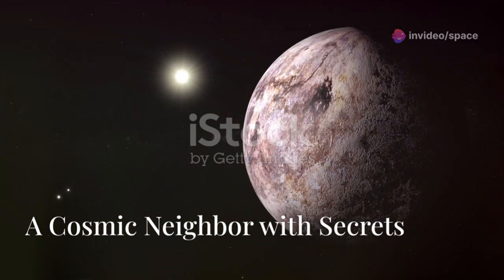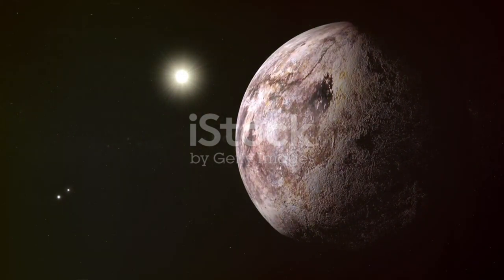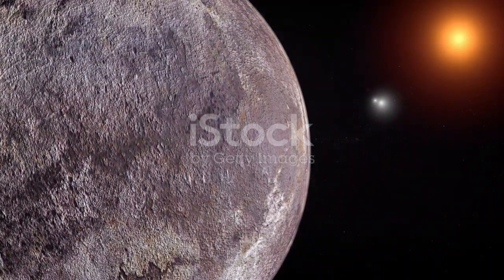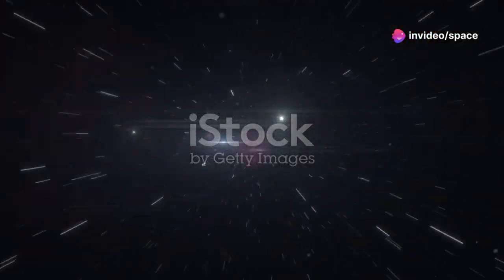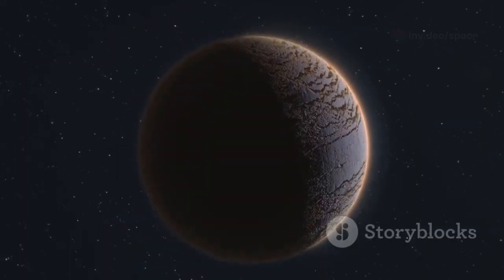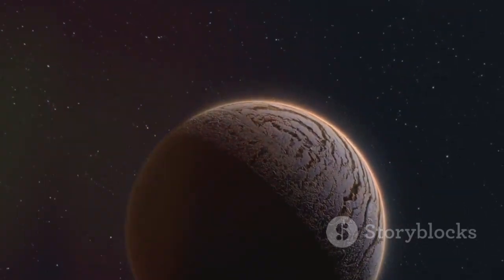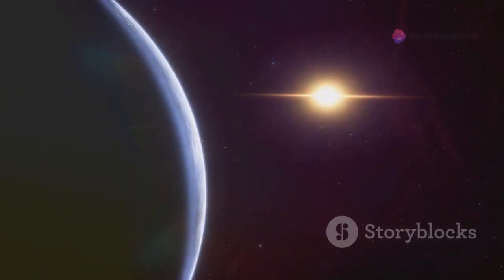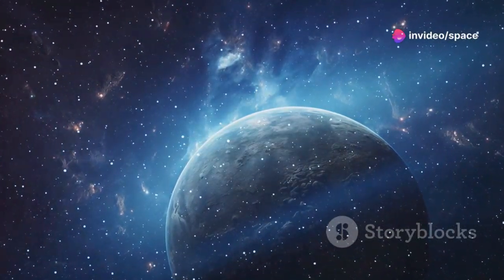Proxima B orbits Proxima Centauri, a red dwarf star, the closest star to our Sun. This makes Proxima B our nearest exoplanetary neighbor, a mere 4.2 light-years away. While this may seem like an immense distance, it is a cosmic stone's throw. Proxima B is a rocky planet, slightly larger than Earth, and lies within its star's habitable zone, where temperatures could allow liquid water to exist. This makes it a prime candidate for harboring life.